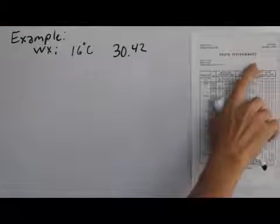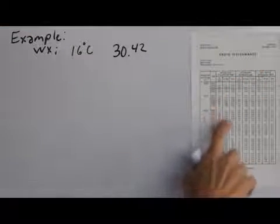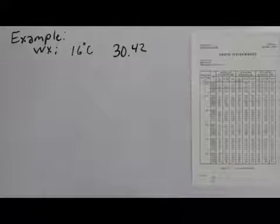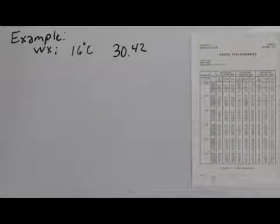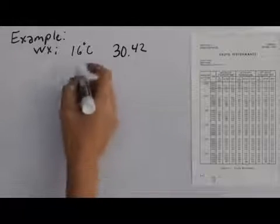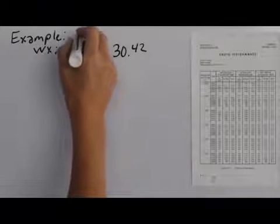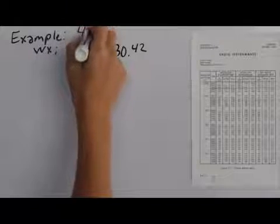Looking at the cruise performance chart, it gives us a chance to see what our expected fuel burn would be and also our expected true airspeed. So for our scenario, we are going to plan to do a VFR flight at 4,500 feet.